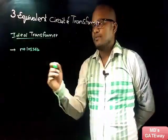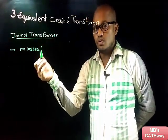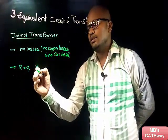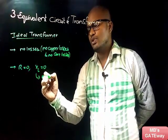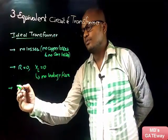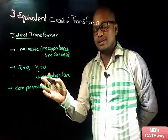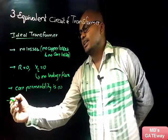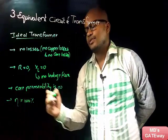Let's discuss the ideal transformer. An ideal transformer is one in which there are no losses — no copper losses, no core losses — and in which the winding resistance is zero and the leakage reactance is zero. This implies there is no leakage flux, and the core permeability is infinity, which means the flux requires very very low MMF to set up, and efficiency is 100 percent.